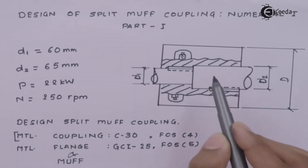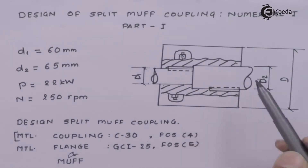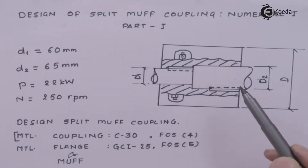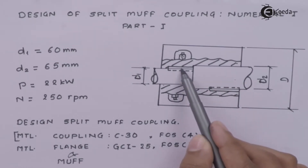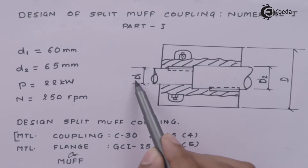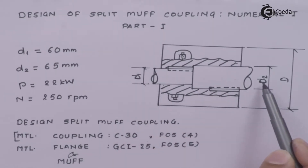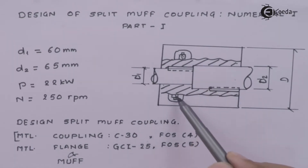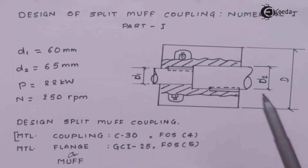This is how your muff coupling looks — this is the upper sleeve and the lower sleeve. These are the two shafts, which are of different diameters and need to be connected together. These are the keys on each shaft. The dimensions of the first and second shafts are given, so we need not design them separately. This is the diameter of the outermost layer of the coupling, and this shows where the bolts are placed.